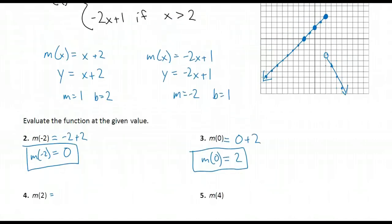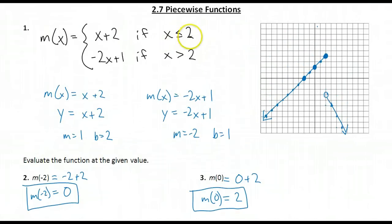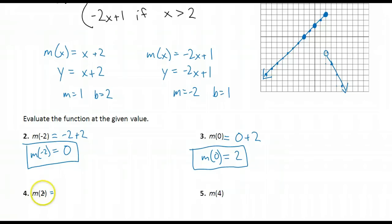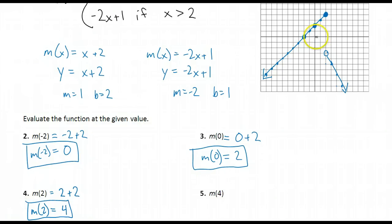Now m of 2. Here we have a choice again — is 2 less than or equal to 2, or is 2 greater than 2? Well, 2 is less than or equal to 2, so for this x value of 2, I plug 2 into the first equation and do the math. If I look at my graph and input 2, am I going to be on the solid dot or the open dot? The solid dot means I have to be there, so my output — my answer for when x equals 2 — is 4.